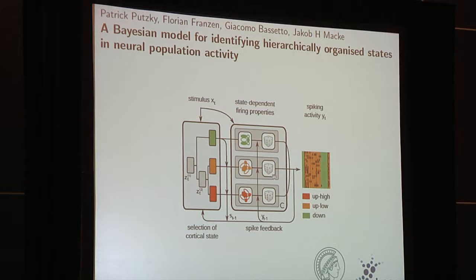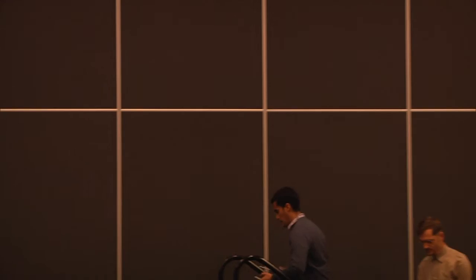We propose a generative model based on a first-order hidden Markov model with input-dependent transition probabilities that can be hierarchically decomposed, and GLM observations. We derive Bayesian inference methods for this model and evaluate them on V1 population data recorded from a macaque. Come talk to me at poster 49.